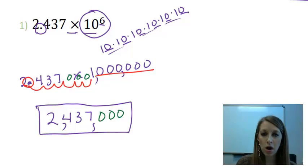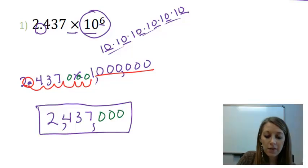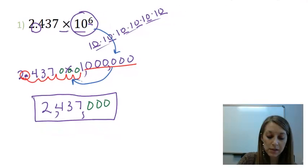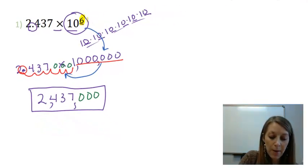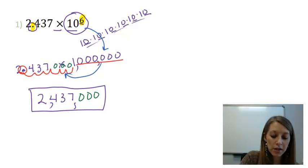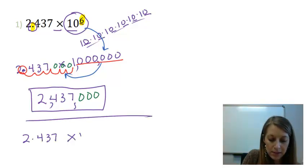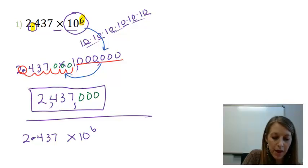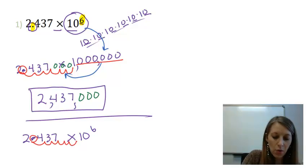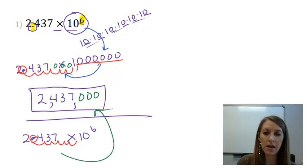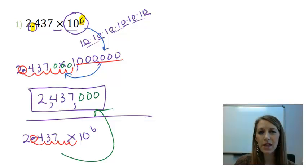But that was the long way. We can skip those steps. Instead of writing out what 10 to the sixth is and then moving the decimal, all we have to do is look at that power and move the decimal place that many units over. So starting from 2.437 × 10^6, just move the decimal six units to the right — one, two, three, four, five, six — and you get the exact same answer. That's the easy way.